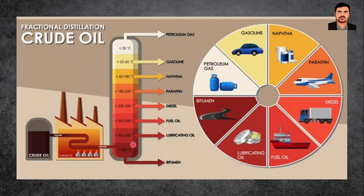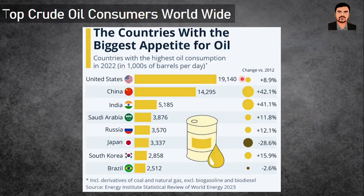In fractional distillation, crude oil stored in a storage tank is heated to various temperature grades ranging from 350°C down to 25°C. From the bottom upward, the products obtained are bitumen, lubricating oil, fuel oil, diesel, paraffin, naphtha, gasoline, petroleum gas. Applications include gasoline for cars, petroleum gas for cooking, bitumen for tarring, lubricating oil and waxes, fuel oil for shipping, diesel for vehicles, and naphtha for aviation turbine fuel. The top crude oil consumers worldwide in 2022 are USA first, then China, then India.